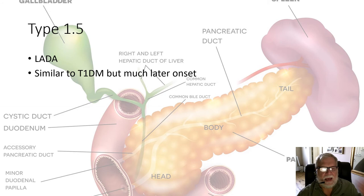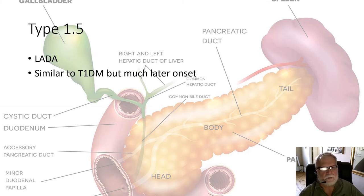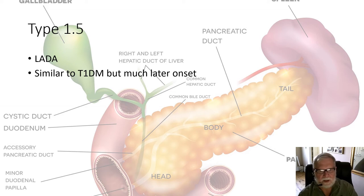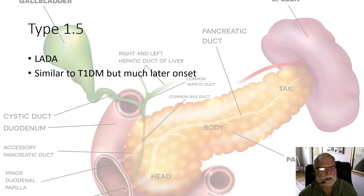Type 1.5 diabetes is late-onset autoimmune diabetes. A person might come in at 40 years old, not feeling well, and have a blood sugar of 350. The challenge is whether they've developed type 2 diabetes or this late-onset autoimmune process. The best way to distinguish is to do a C-peptide and some antibody testing to see if there are autoimmune antibodies, and based on laboratory testing determine whether it's type 1.5 or type 2.